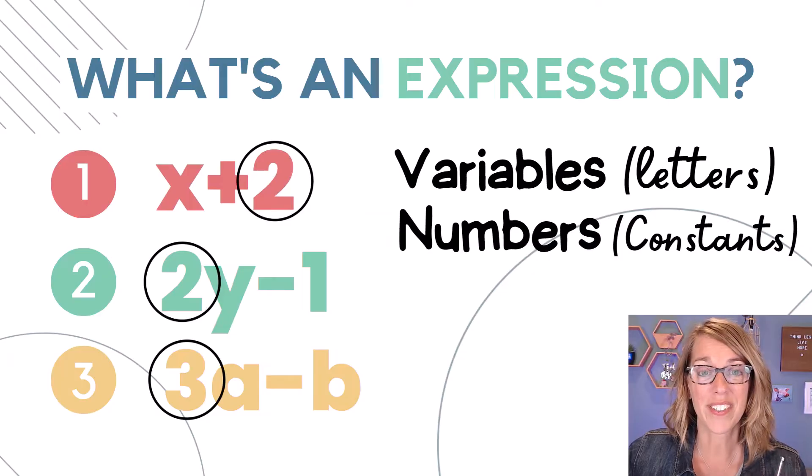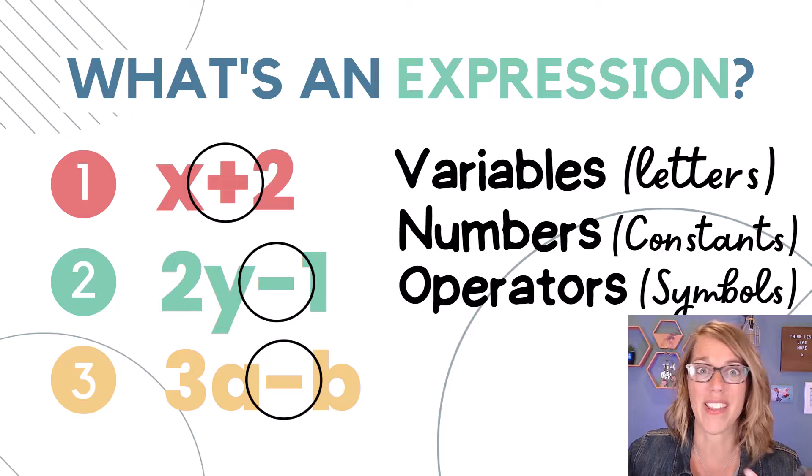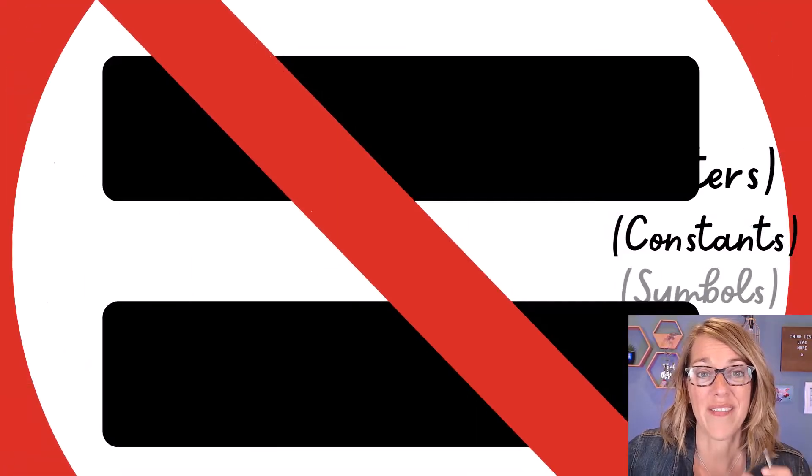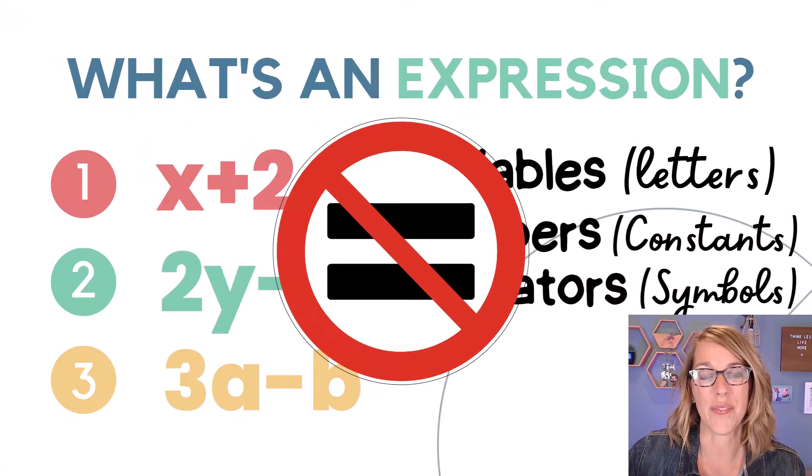Numbers, which in algebra we sometimes call constants, and symbols, or these mathematical operators, plus and minus and multiply. The other thing they have in common is what they don't have, and none of them have an equal sign. Let's get right to it.